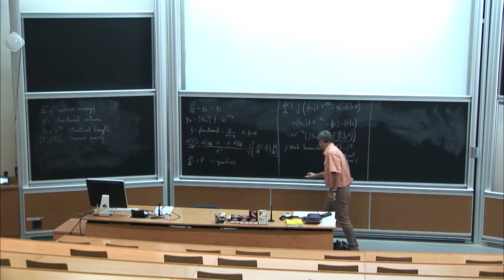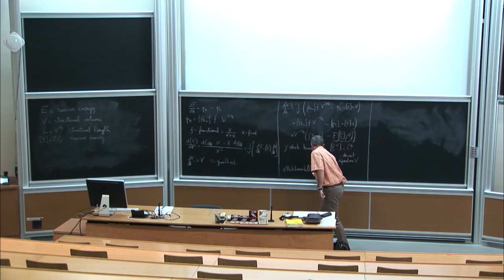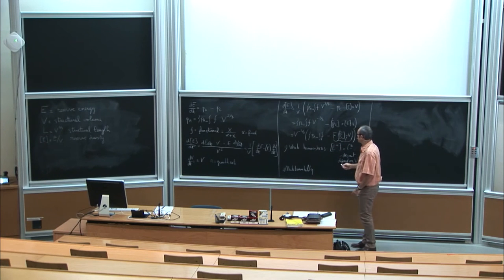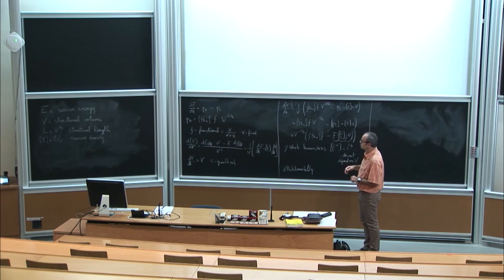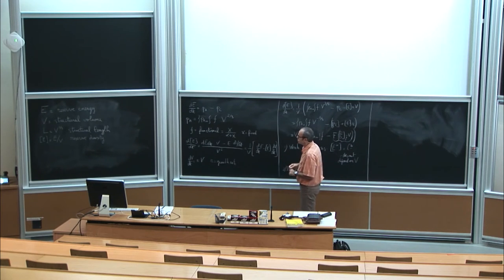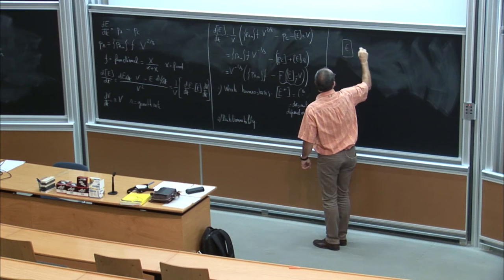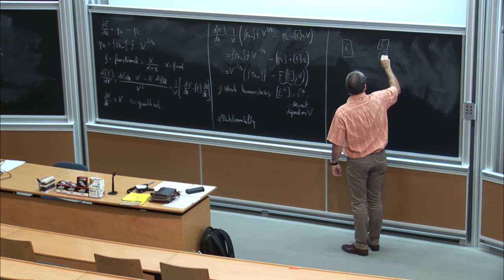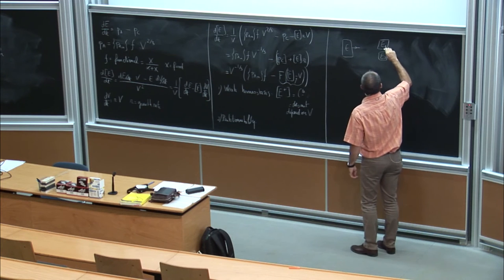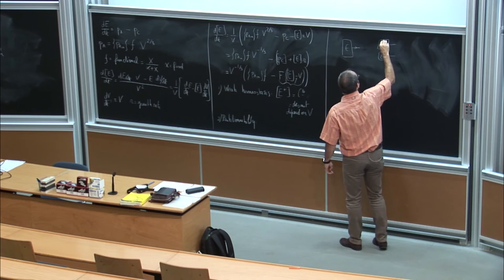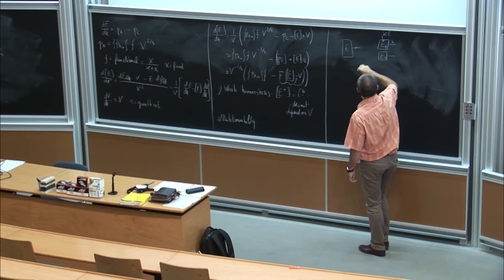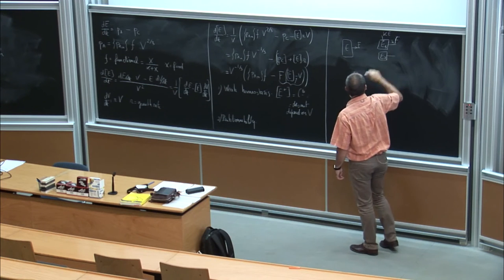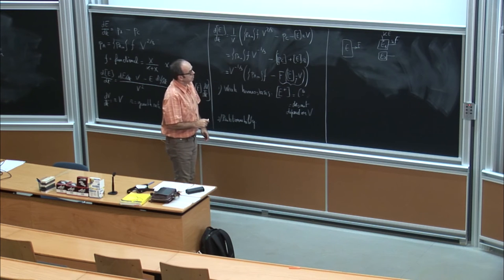The second assumption is partitionability, which means that if we decide to use two reserve compartments instead of one, the flux leaving the reserve density can be separated. If we consider one reserve instead of two, the flux can be divided into two fluxes. If one part is a proportion kappa of E, then the flux here is proportional to kappa. This is the second assumption.